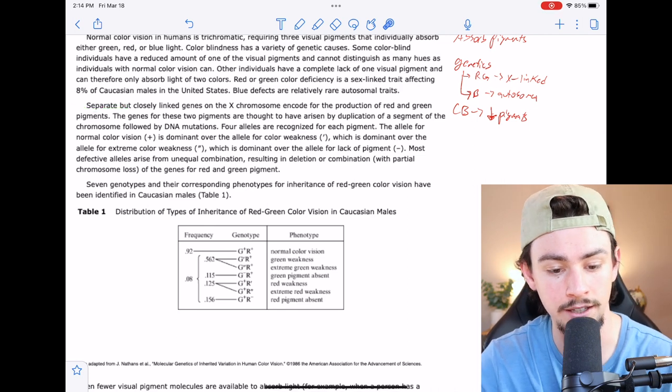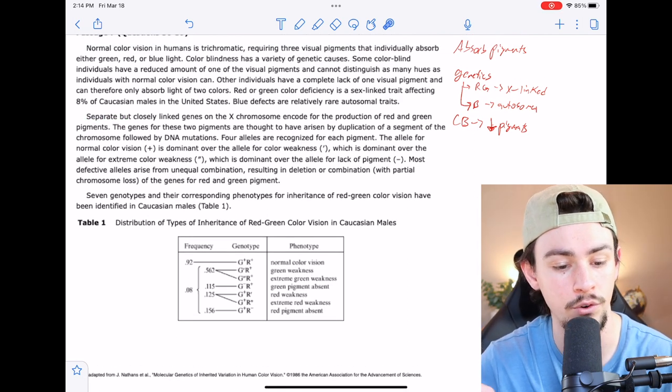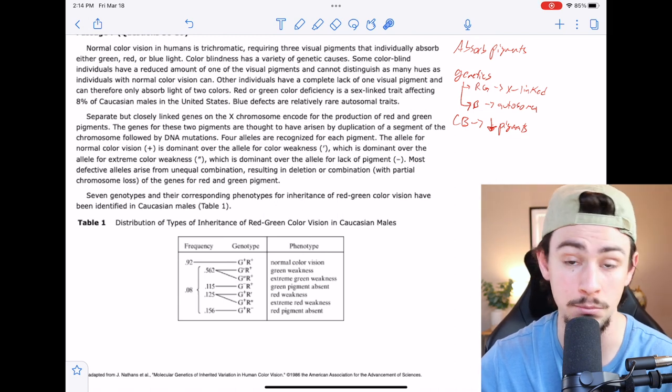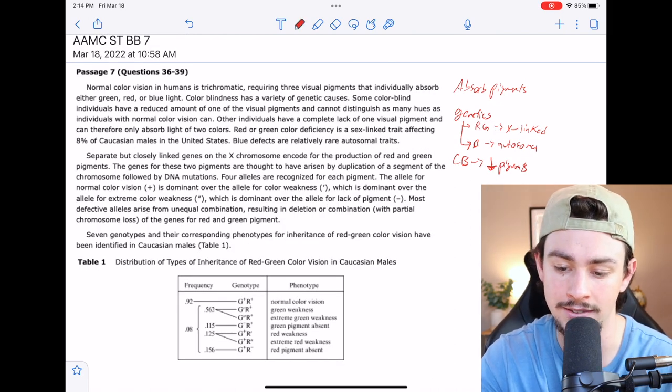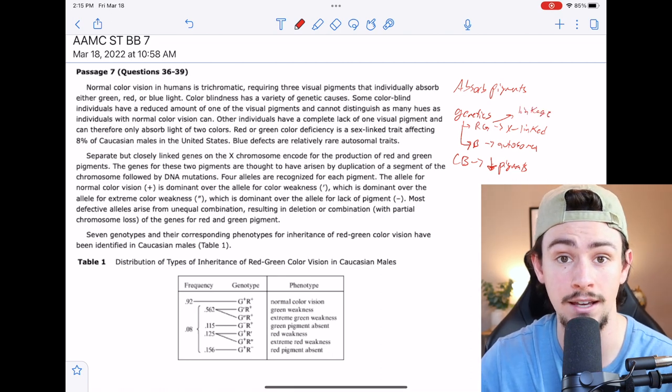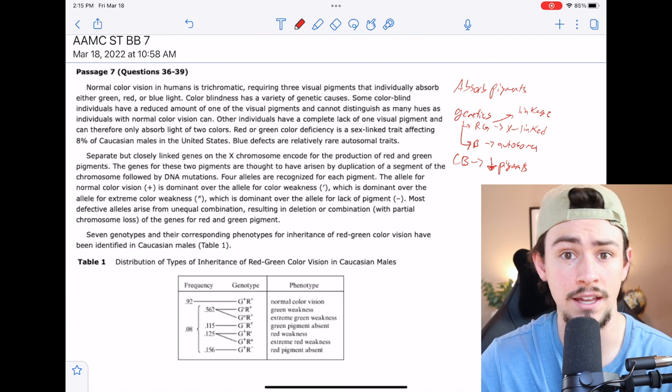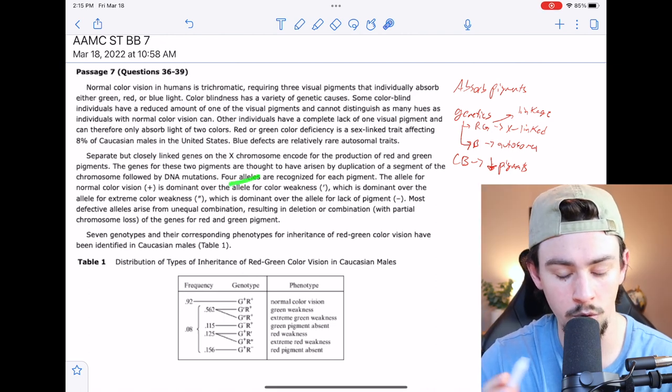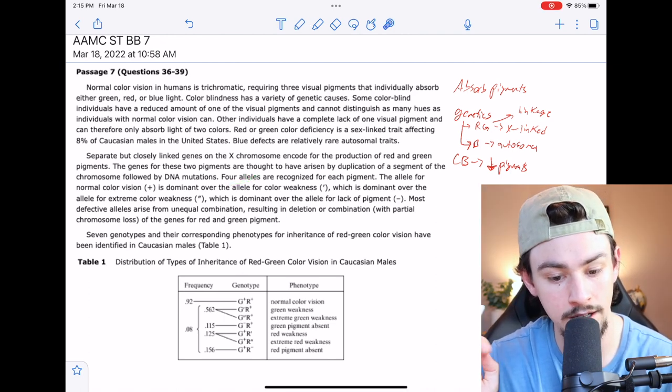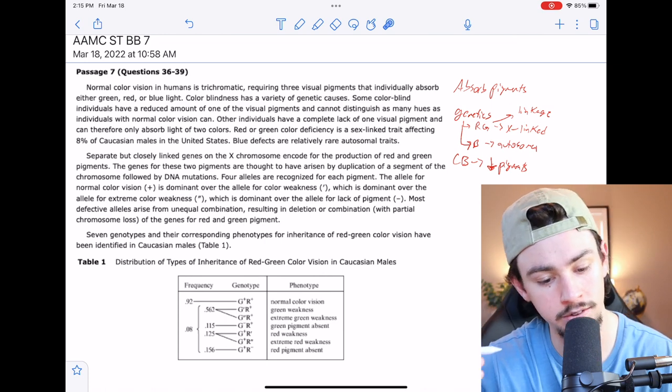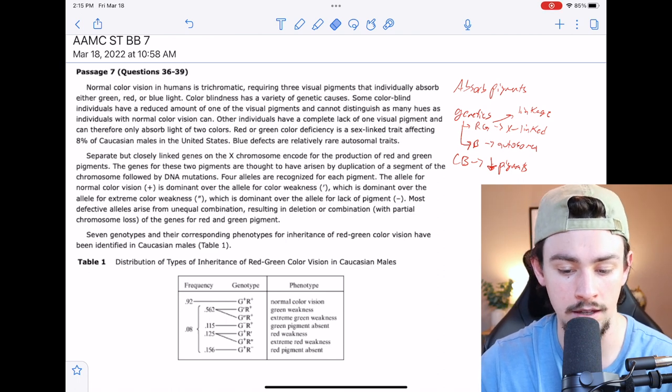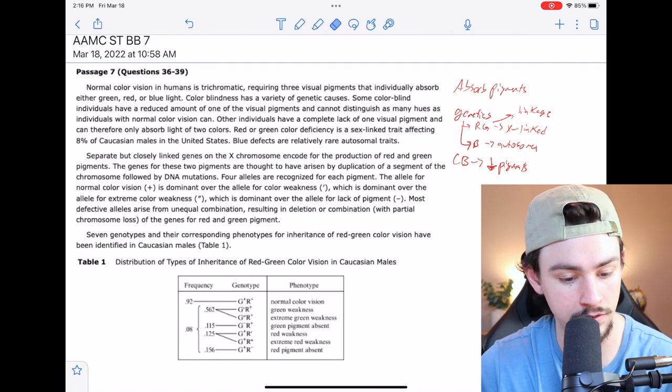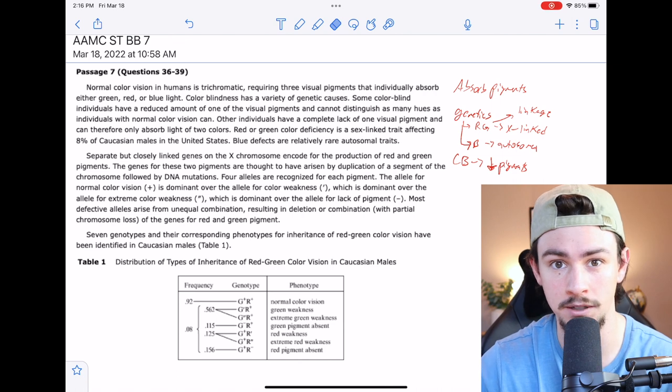It says separate but closely linked genes on the X chromosome encode for the production of red and green pigments. The genes for these two pigments are thought to have arisen by duplication of a segment of the chromosome followed by DNA mutations. So the important thing there is that this involves linkage. Linkage is that thing that busted up Mendel's P experiment - the idea that two genes, if they're close enough on a chromosome, can actually impact the inheritance cycle of each other. It says four alleles are recognized for each pigment. The allele for normal vision is plus, dominant over color weakness (one apostrophe), which is dominant over extreme color weakness (two), which is dominant over the allele for lack of pigment. So it seems like progressively we want to retain pigment. The retention of pigment seems to be dominant.